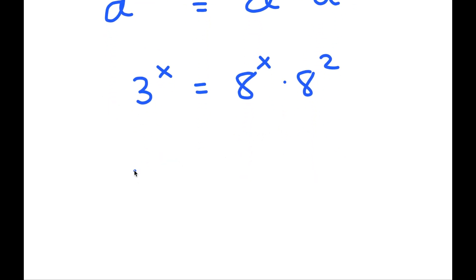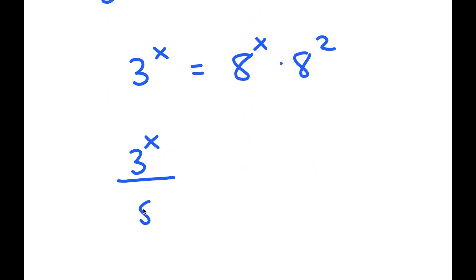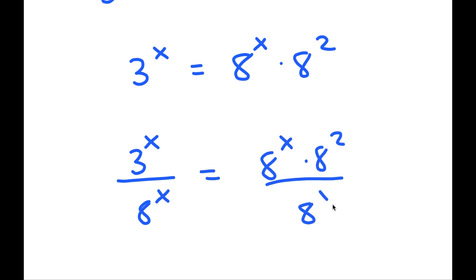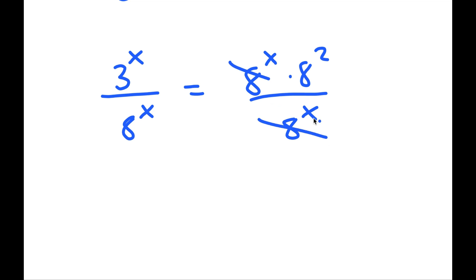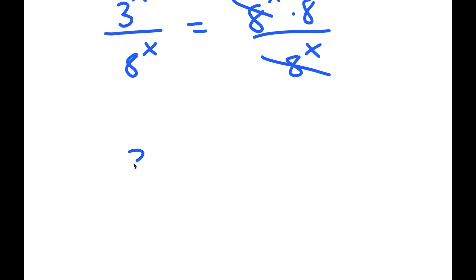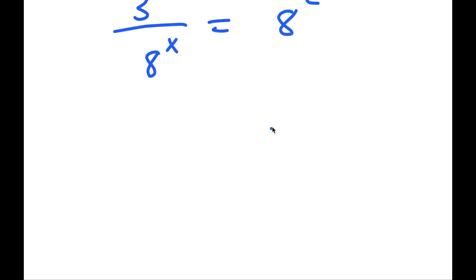From here, I'm going to divide both sides by 8 to the power of x. So on my right-hand side, these two cancel out. I get 3 to the power of x over 8 to the power of x is equal to 8 to the power of 2.